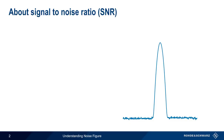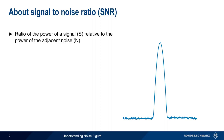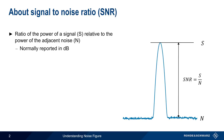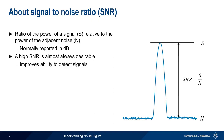To understand noise figure, we first need to start with signal-to-noise ratio. Signal-to-noise ratio, or SNR, is simply the ratio of the power of a signal relative to the power in the adjacent noise. Since power in radio frequency systems is normally reported in logarithmic units, SNR is also normally reported in logarithmic units, that is, in decibels or dB. A high signal-to-noise ratio is almost always desirable. The higher a signal is above the noise, the easier it is to both detect or see the signal, and the easier it is to demodulate or extract information from the signal.